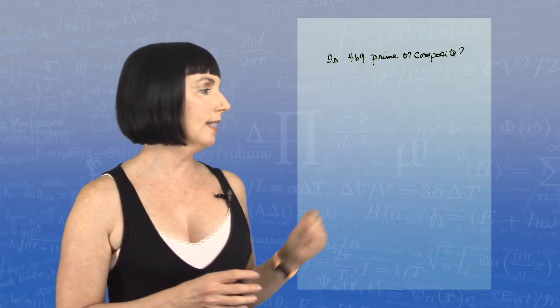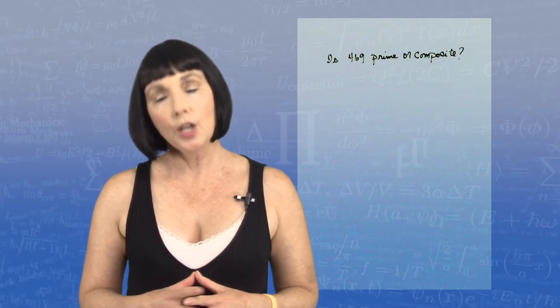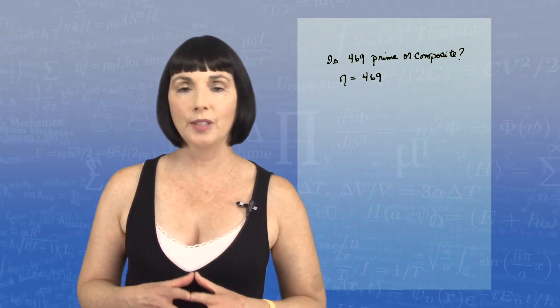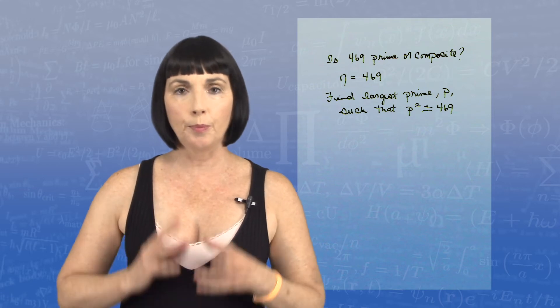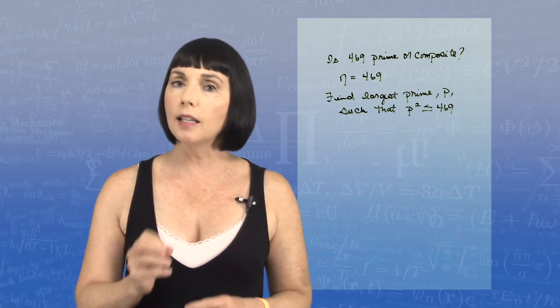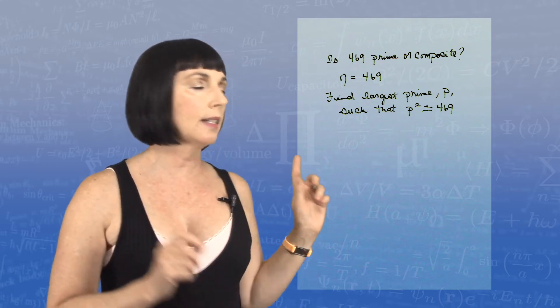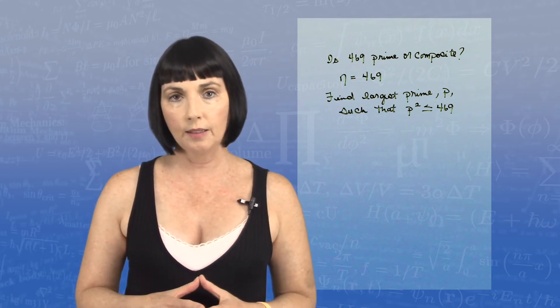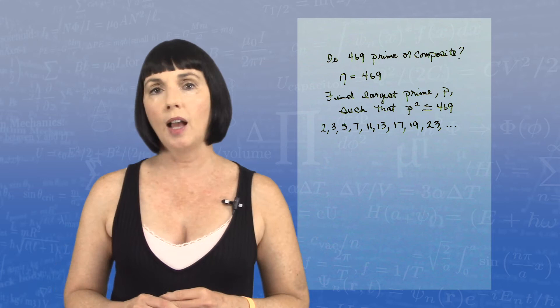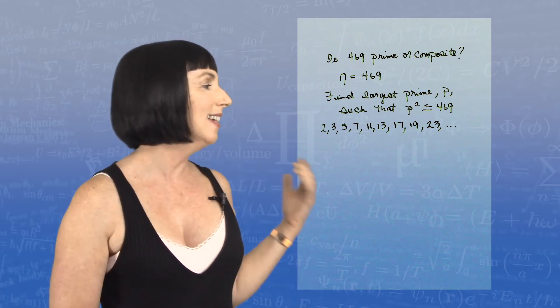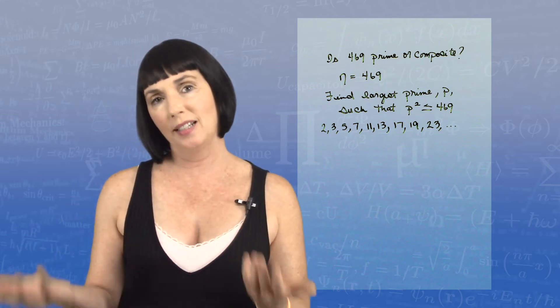Okay, let's do another one. Is 469 prime or composite? So in this case, our number n is equal to 469. And I'm looking for the largest prime number p I can find such that p squared is less than or equal to 469. So again, my first few prime numbers are 2, 3, 5, 7, 11, 13, 17, 19, 23, etc.